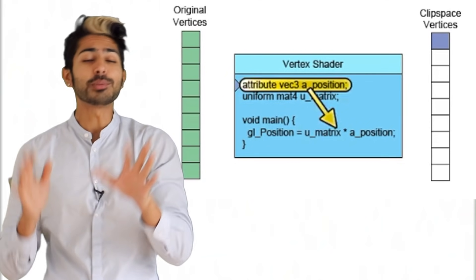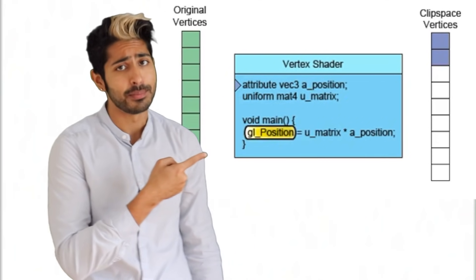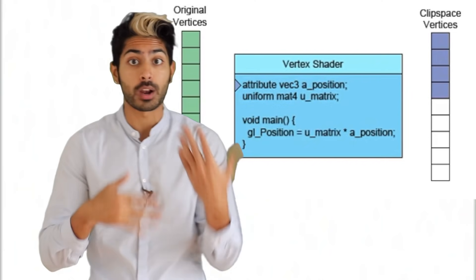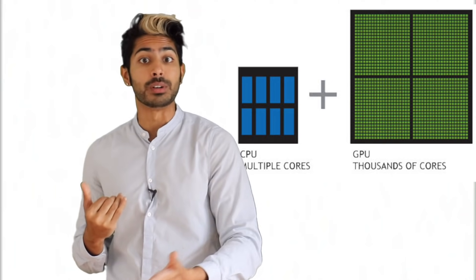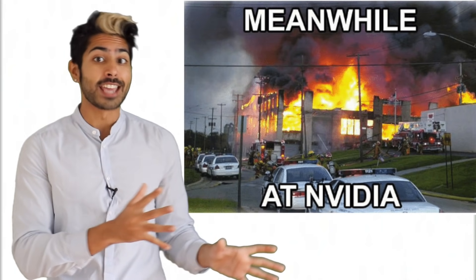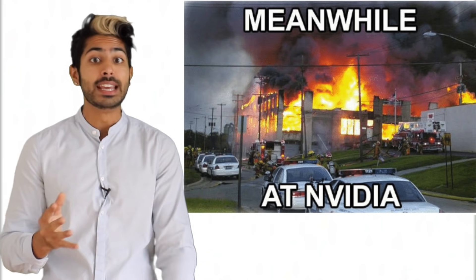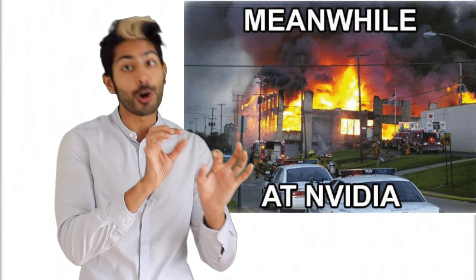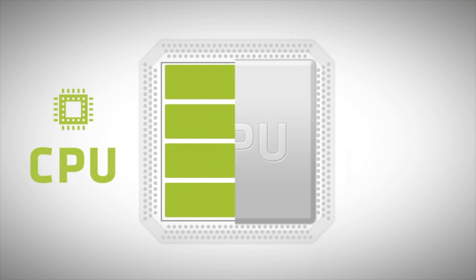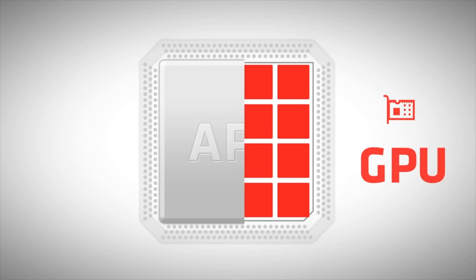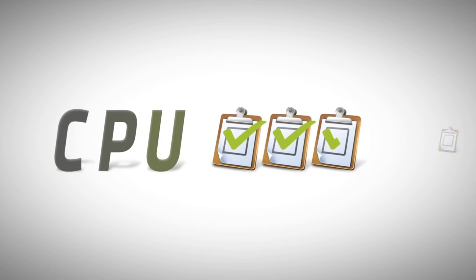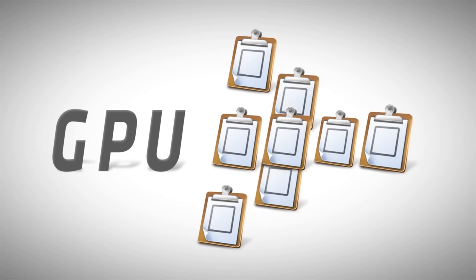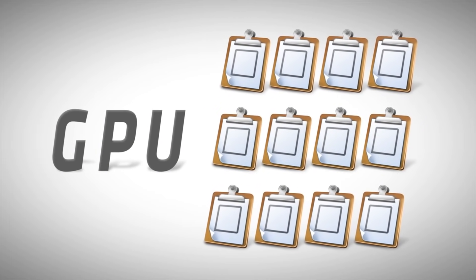For older games with simple models, this was entirely doable by a CPU. But as models got more complex, the amount of transformations outgrew the capabilities of a CPU alone. So a company named Nvidia came along and released the first graphics processing unit in 1999, capable of hardware transform and lighting. A CPU consists of a few cores optimized for sequential serial processing, while a GPU has a massively parallel architecture consisting of thousands of smaller, more efficient cores designed for handling multiple tasks simultaneously.